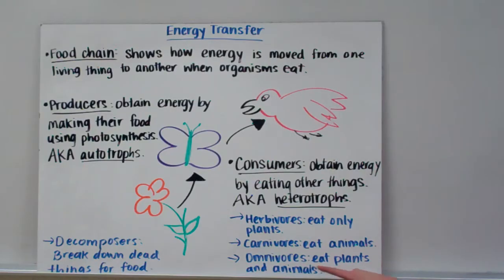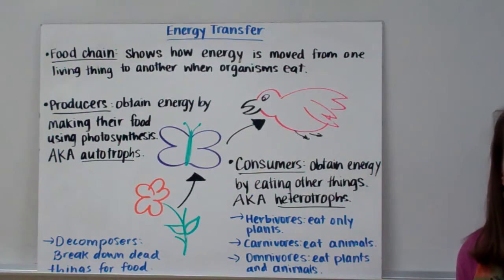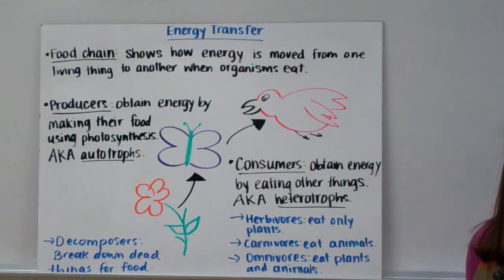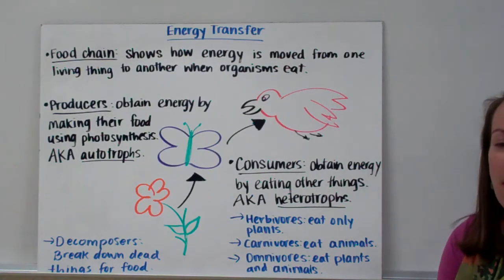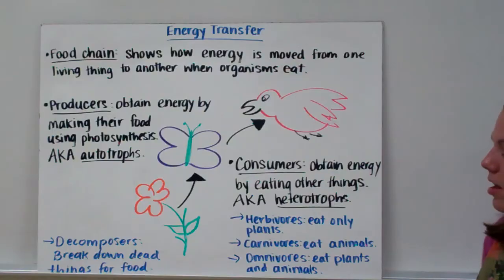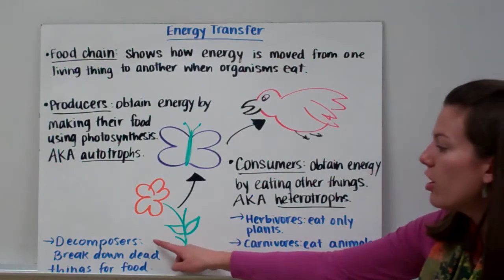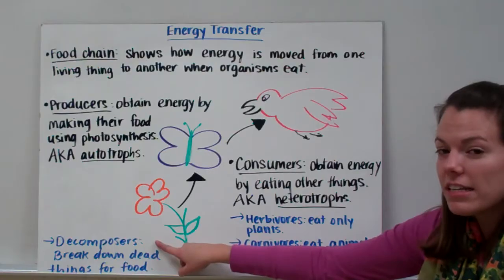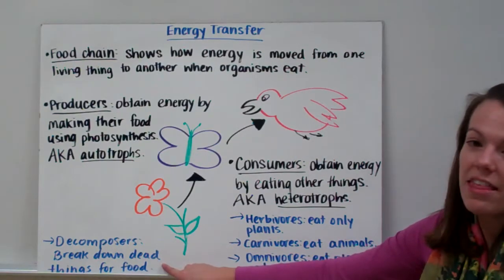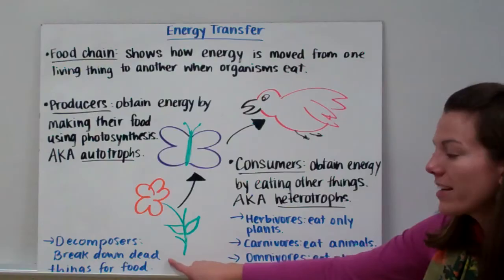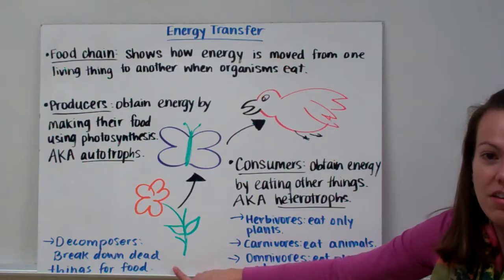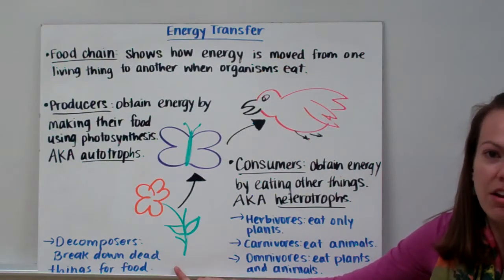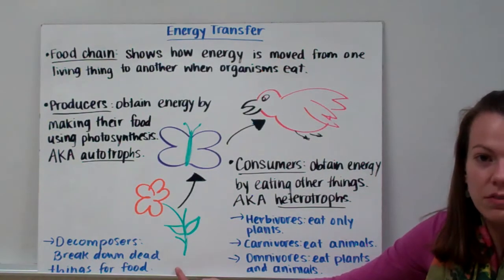Omnivores are living things that eat both plants and animals. Humans are omnivores — we eat meat, eggs, and dairy products derived from animals, but we also eat things derived from plants like potatoes, broccoli, and squash. There's one other kind of consumer you need to know about: decomposers. We really like decomposers because they break down dead things and use them for food. Bacteria are one type of decomposer and fungi are decomposers as well. If they didn't break down all that stuff, we would have garbage and dead carcasses laying all around.